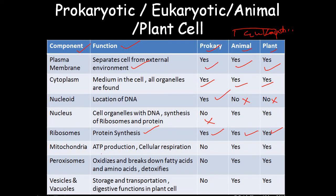Mitochondria, the powerhouse of the cell, produces ATP for cellular respiration. It is not present in prokaryotic cells. Peroxisomes oxidize and break down fatty acids and amino acids, and detoxify poisons in the cell. They are not present in prokaryotic cells but are present in animal and plant cells. Vesicles and vacuoles serve storage, transportation, and digestive functions — not present in prokaryotic cells. The vacuole in plant cells is larger than in animal cells, and in plants it also helps maintain shape and structure.